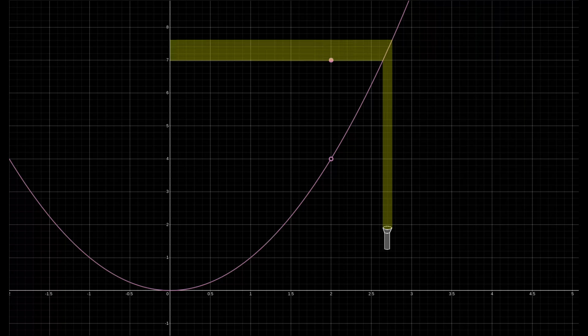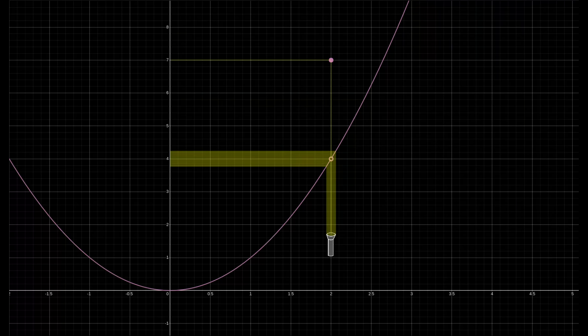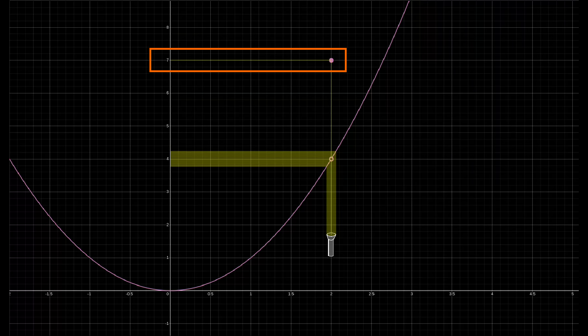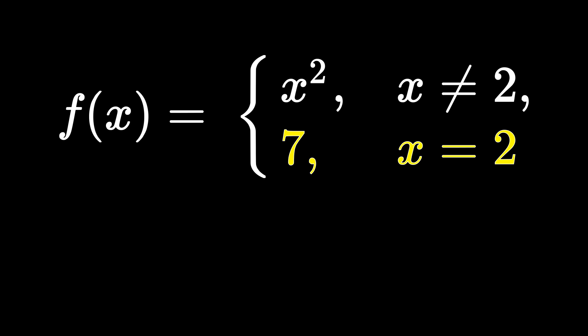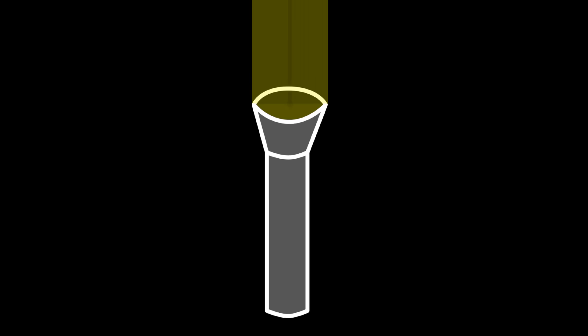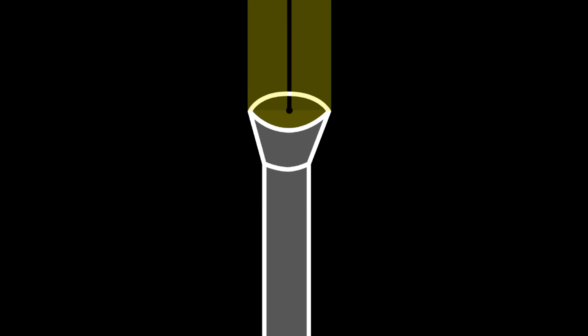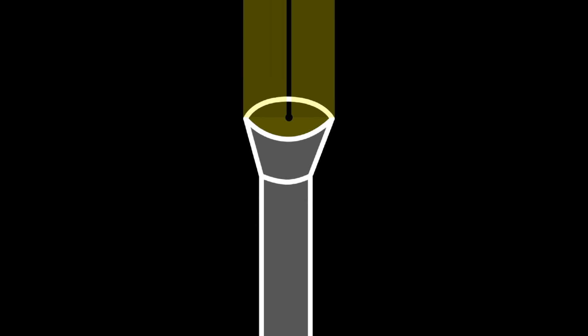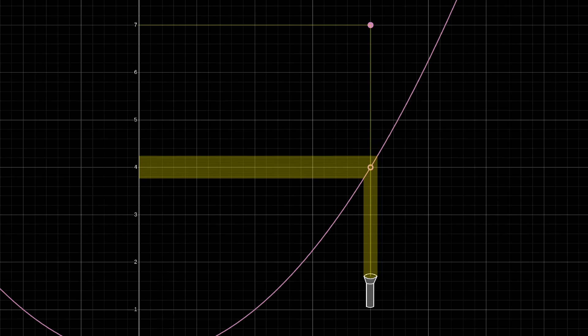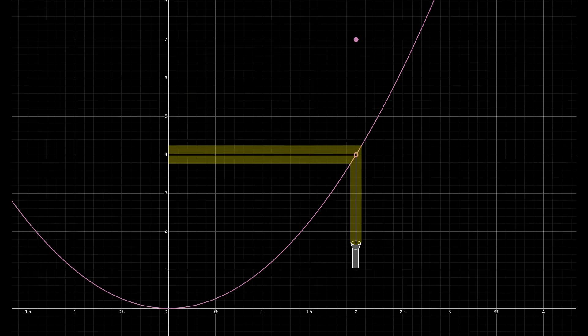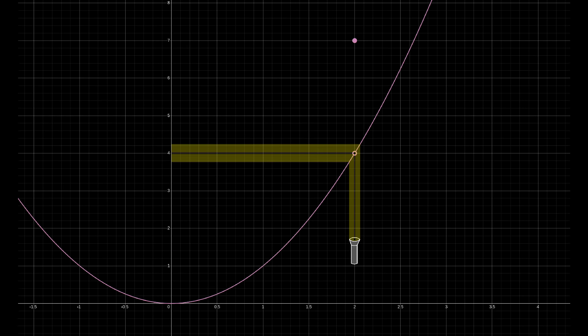On the other hand, if we point a flashlight at this function around the input of 2, we see that it does highlight the output of 7, but it also highlights a totally different region surrounding y equals 4. This reflects the fact that, aside from an input of exactly 2, the function is just y equals x squared, and so inputs around 2 are going to give us outputs around 4.